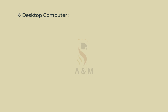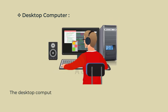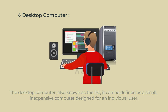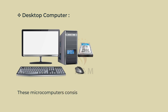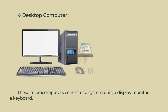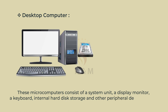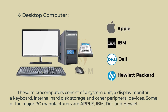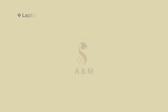First: Desktop Computer. The desktop computer, also known as a PC, can be defined as a small, inexpensive computer designed for an individual user. These microcomputers consist of a system unit, a display monitor, a keyboard, internal hard disk storage and other peripheral devices. Some of the major PC manufacturers are Apple, IBM, Dell and Hewlett Packard.